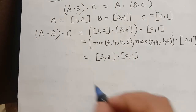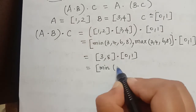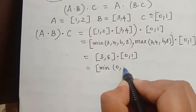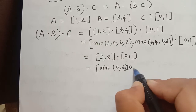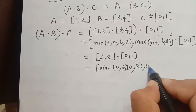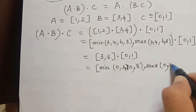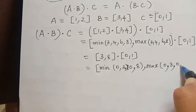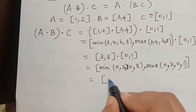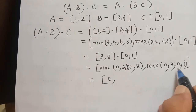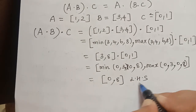Applying the same formula, [3, 8] multiplied with [0, 1] gives closed interval [minimum of {3×0, 3×1, 8×0, 8×1}, maximum of {0, 3, 0, 8}], which equals closed interval [0, 8]. This is our left hand side.